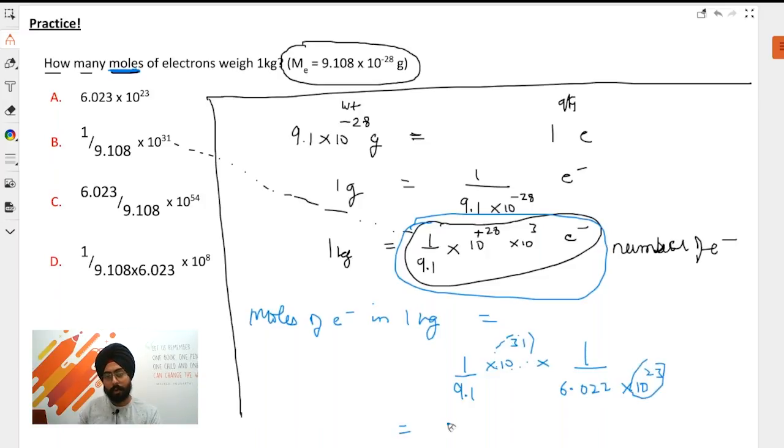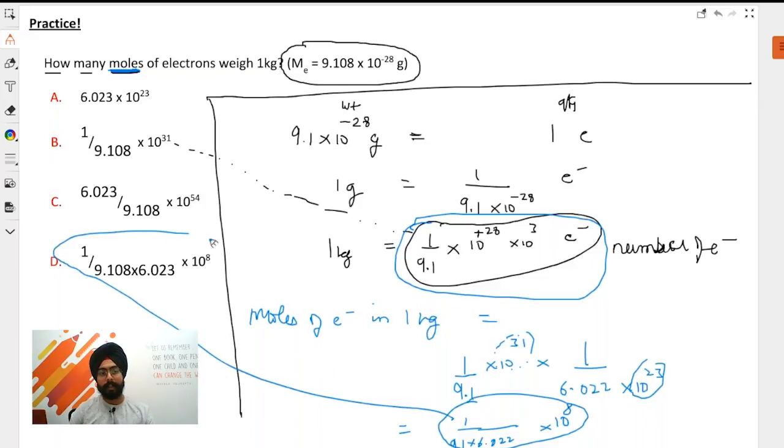Ultimately what you will end up with is 1/(9.1 × 6.023) × 10^8, because 31 minus 23 is 8. When you take this 10 here, you invert the power. So this is the number of moles present in one kg of electrons, and that is why D is the correct option.